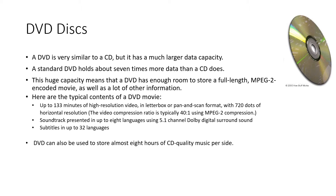DVD is very similar to the CD but it has a much larger data capacity. A standard DVD holds about 7 times more data than a CD does. This huge capacity means that DVD has enough room to store a full-length MPEG-2 encoded movie. For example, 133 minutes of high resolution video can be stored in pan and scan format, which is 720x576 resolution. The video compression ratio is typically 40:1 using MPEG-2 compression.